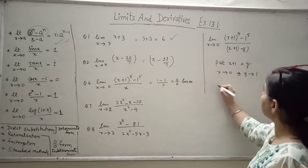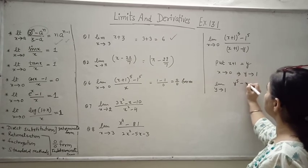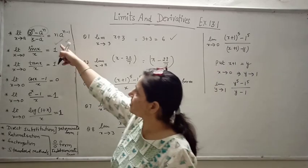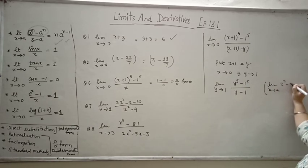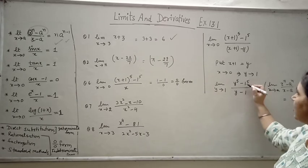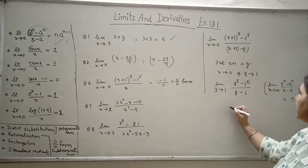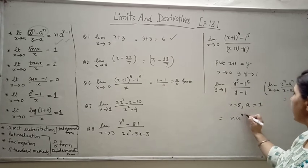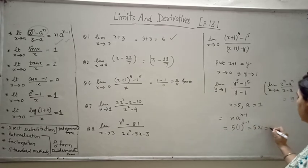Now this looks exactly like the standard formula: limit x tends to a of (x^n minus a^n)/(x minus a) equals n times a^(n-1). Here n is 5 and a is 1. So applying the formula gives n times a^(n-1) = 5 times 1 raised to power 4 = 5 times 1 = 5. The answer is 5.